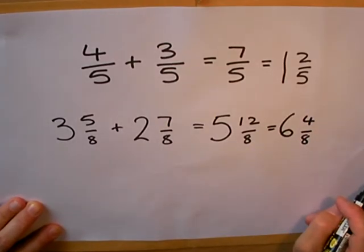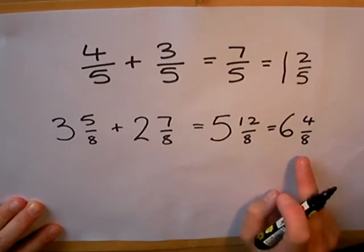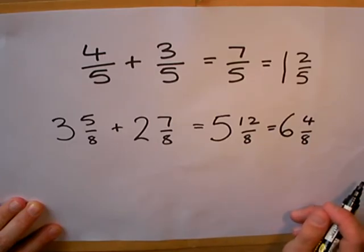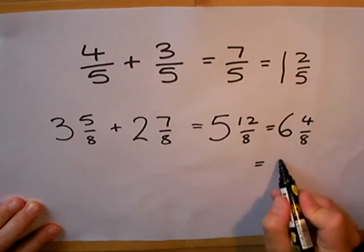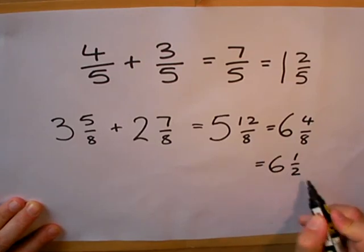Some of you may notice that four eighths can be more easily written as a half, so we cancel that down to six and a half.